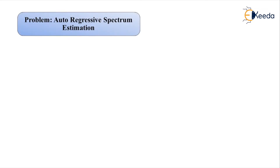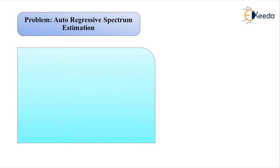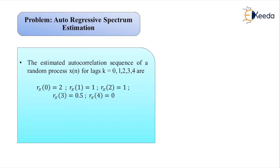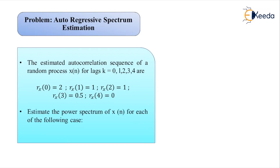The problem statement begins: the estimated autocorrelation sequence of a random process x(n) for lags k = 0, 1, 2, 3, and 4 are given as: rx(0) = 2, rx(1) = 1, rx(2) = 1, rx(3) = 0.5. We have been asked to estimate the power spectrum for the random process x(n).